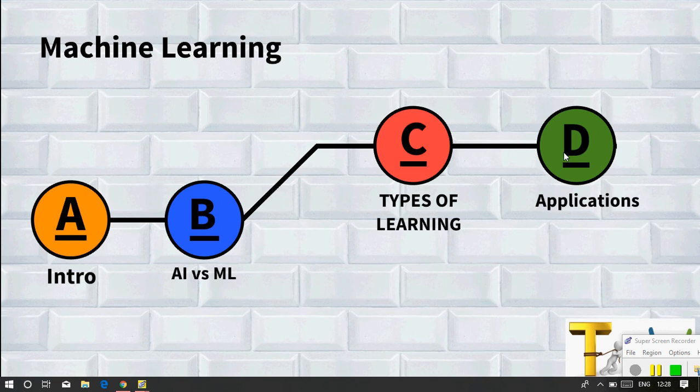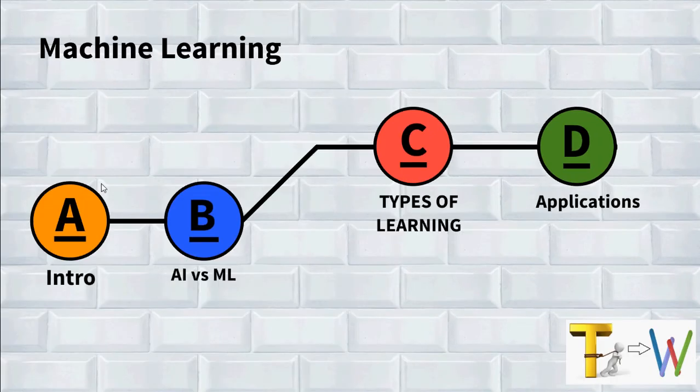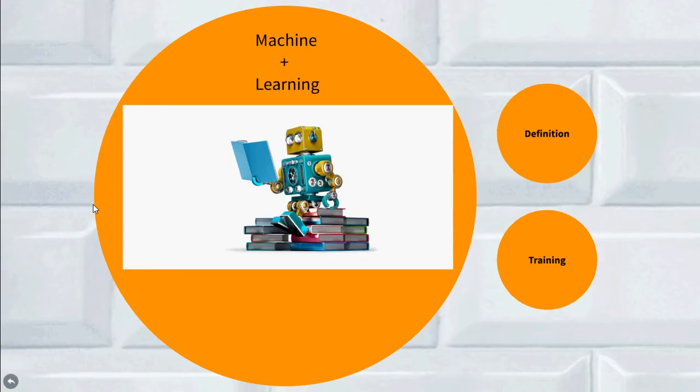Let's try to understand machine learning from its name. We have machine and learning. We have a machine whom we are trying to teach so that it can learn and get better over time and can derive better results which were earlier not possible. Now let's have a look at the formal definition of machine learning.